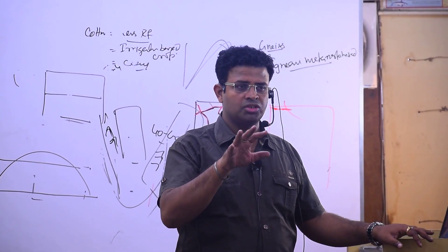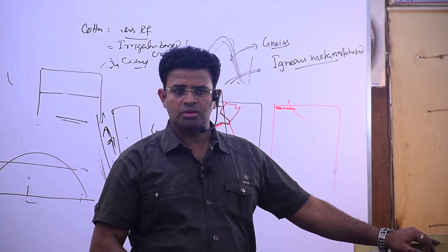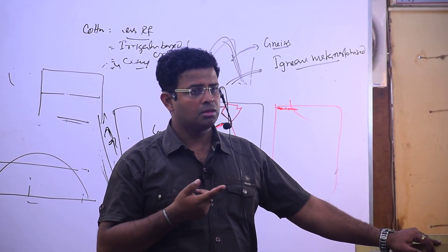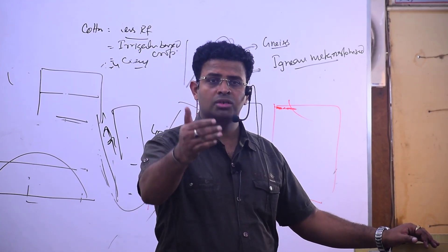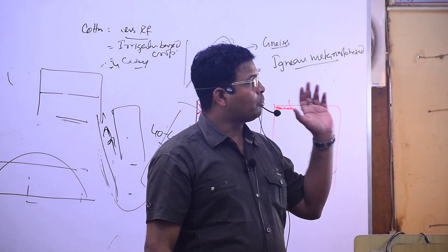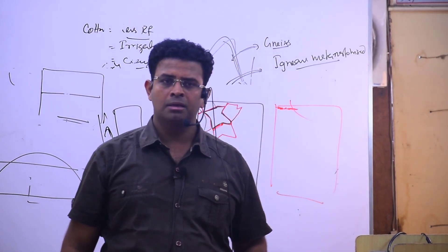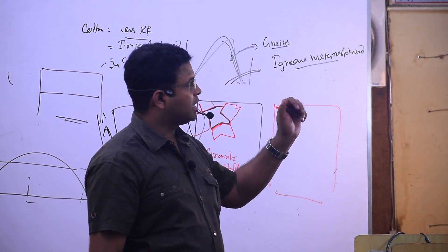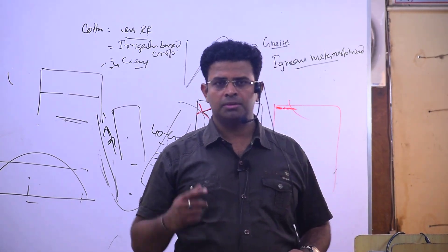So these four things I am going to discuss: structure, process, stage, and time. Sorry - structure, climate, stage, time. Then topography - topographically, slope and relief. The slope has a direct relationship with the rate of erosion and weathering.